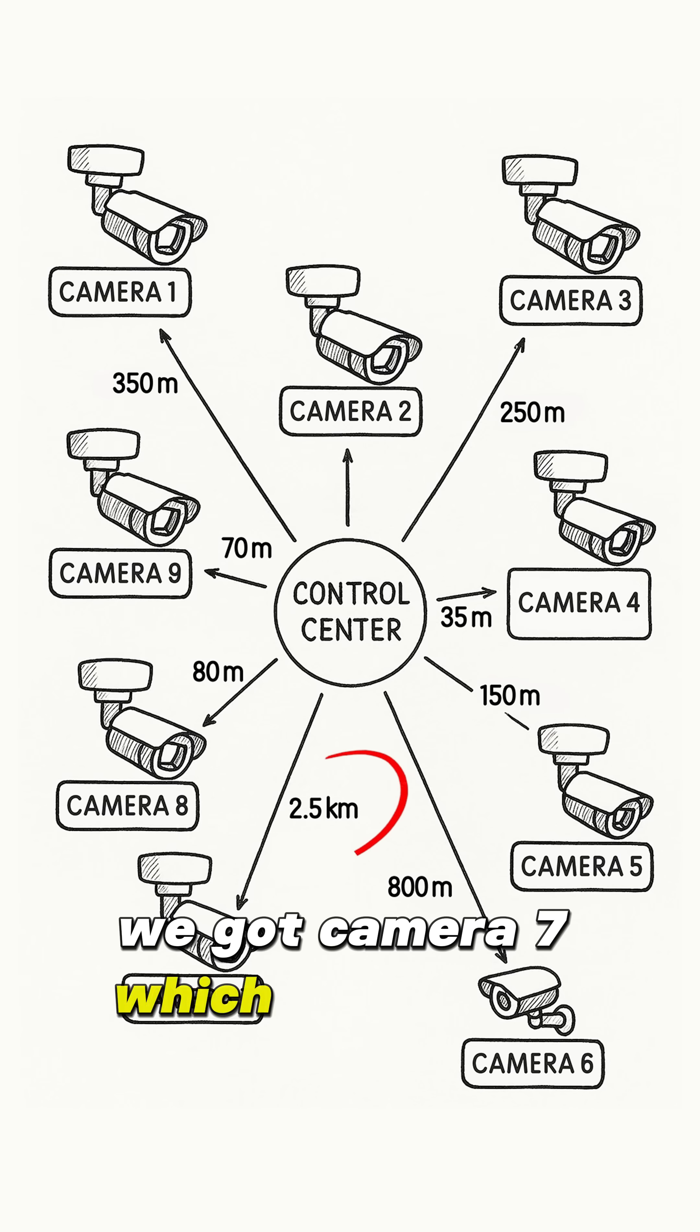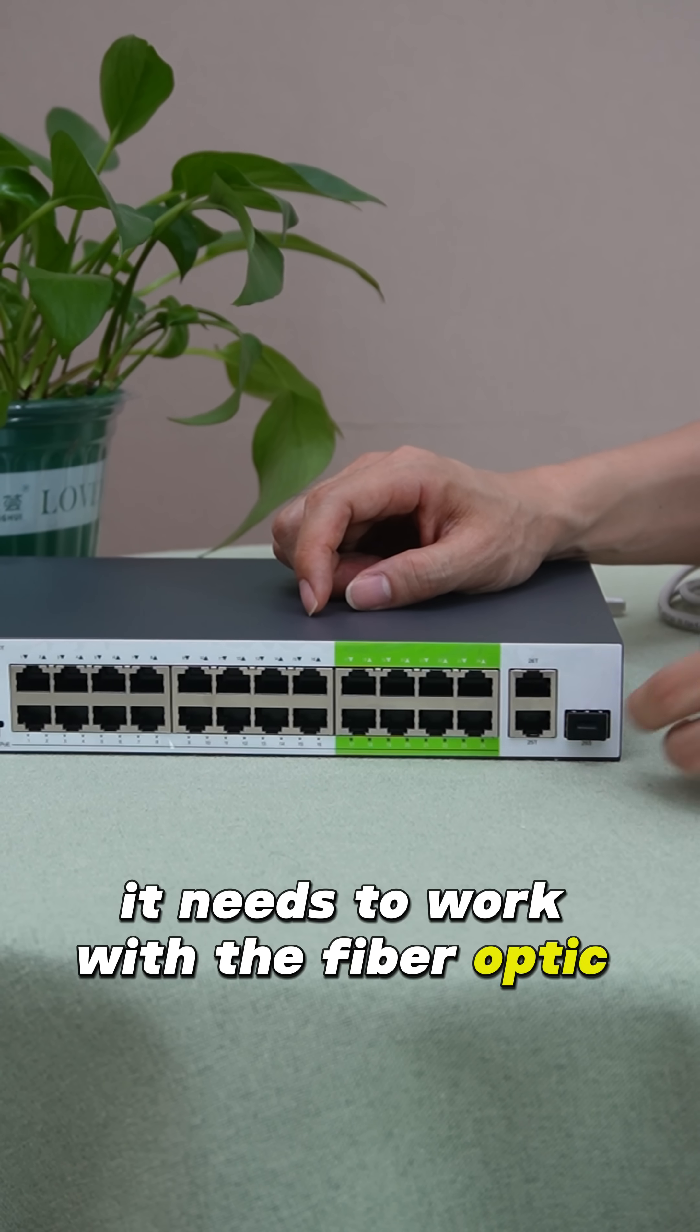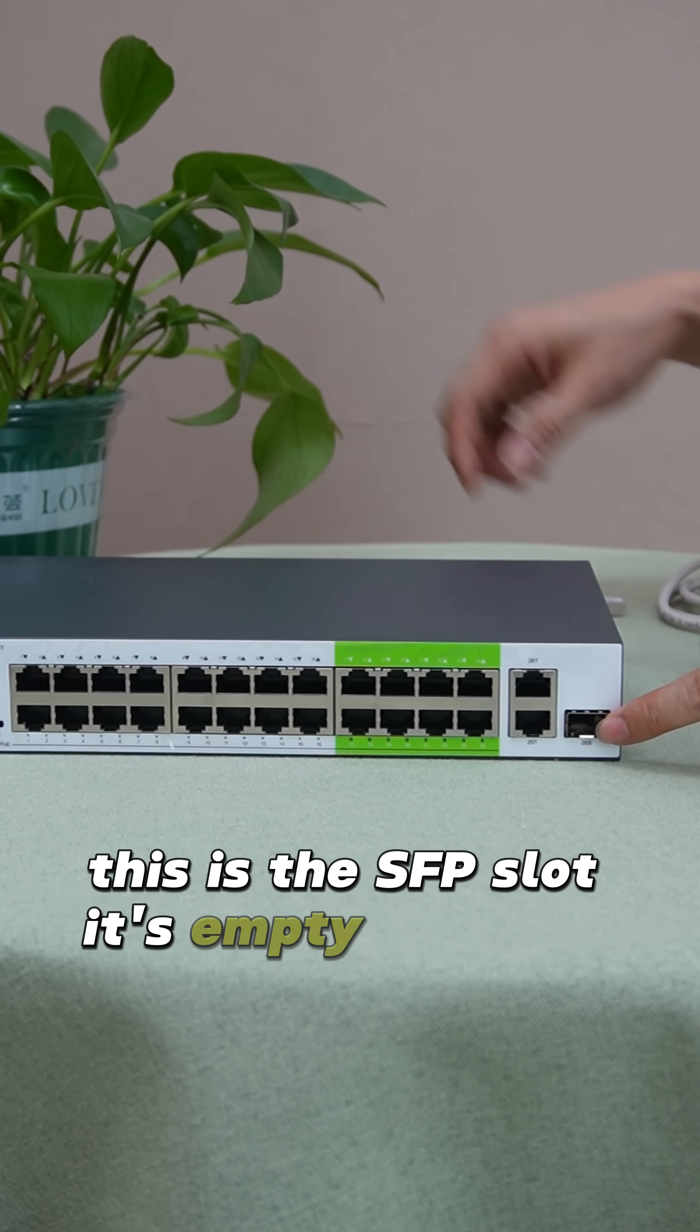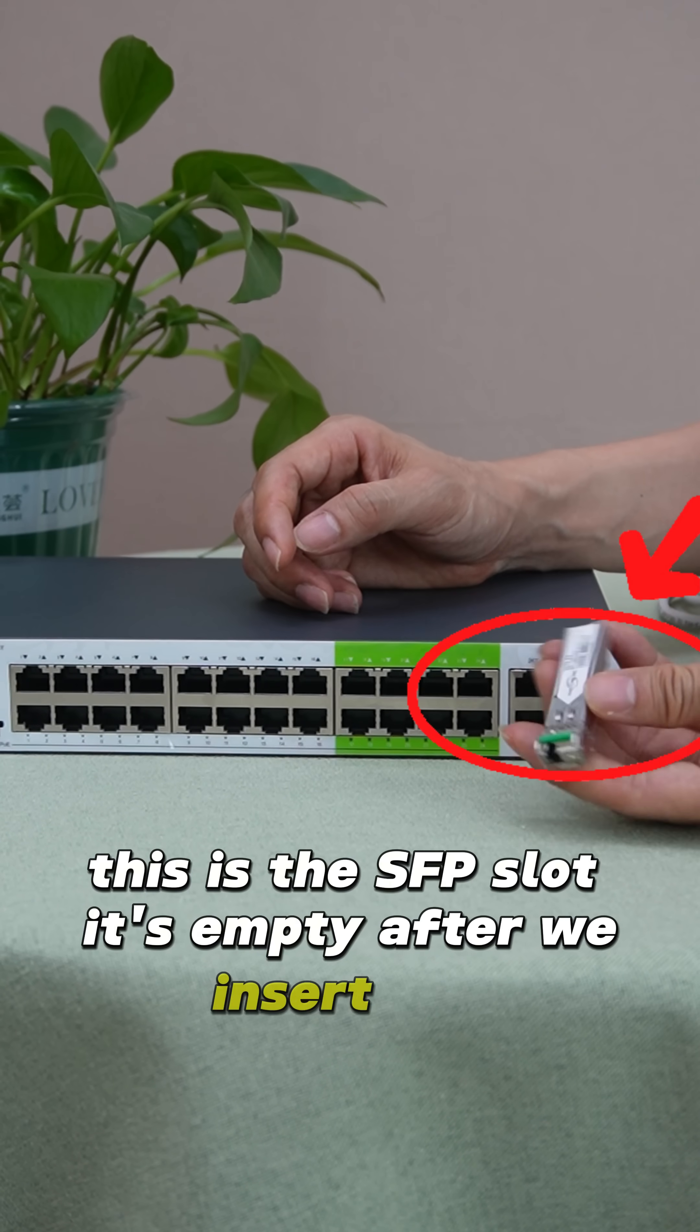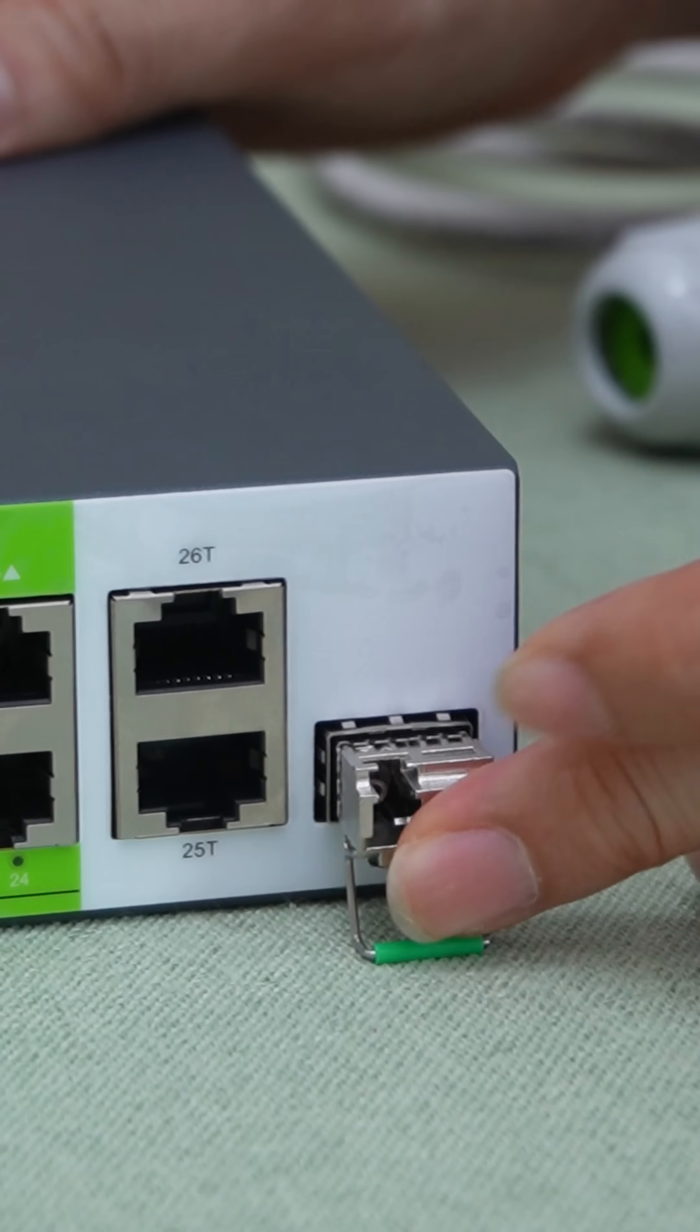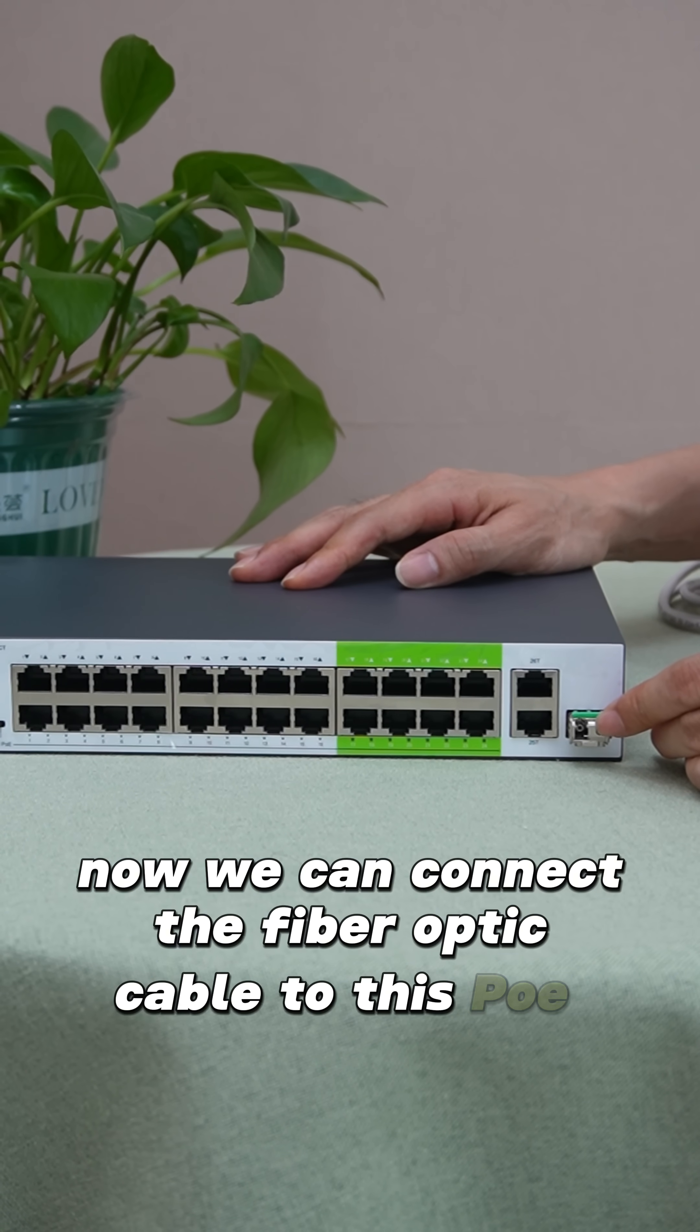We got camera 7, which has 2.5 kilometers. It needs to work with the fiber optic cable. This is the SFP slot. It's empty. After we insert the SFP transceiver, now we can connect the fiber optic cable to this PoE switch.